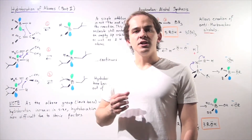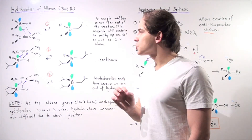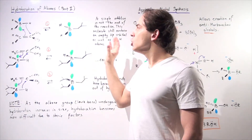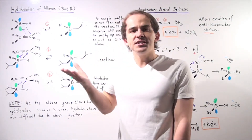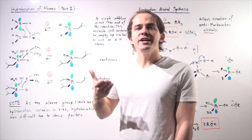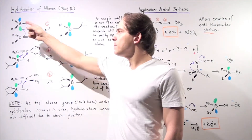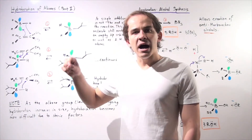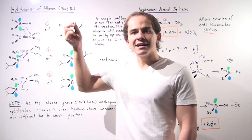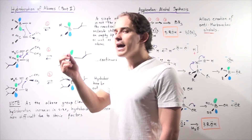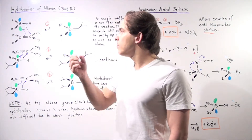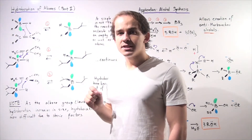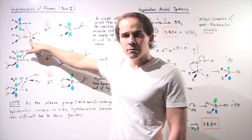Continuing from the previous lecture, recall that our hydroboration mechanism looked as follows. We had a Lewis base, our alkene, react with our Lewis acid, the BH3 molecule. The pair of electrons in the pi bond attacks the Lewis acid — the empty 2p orbital of the boron — and at the same time, one of the BH bonds breaks and the hydrogen moves onto the carbon.